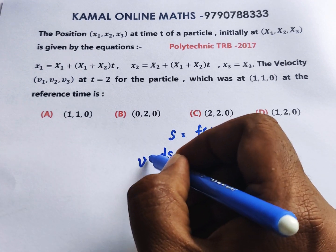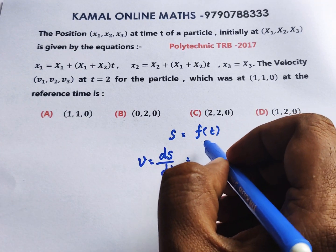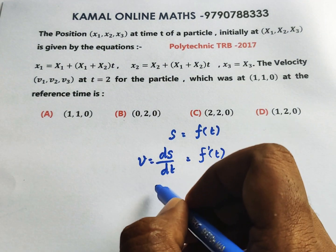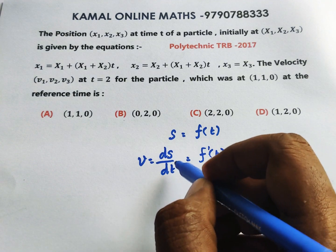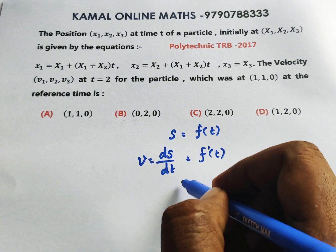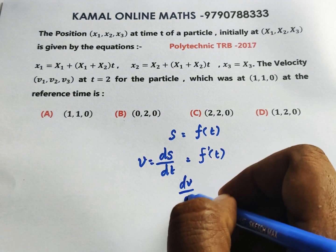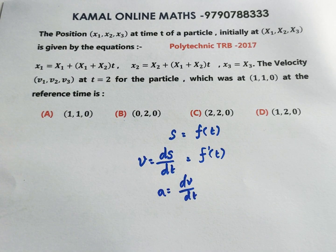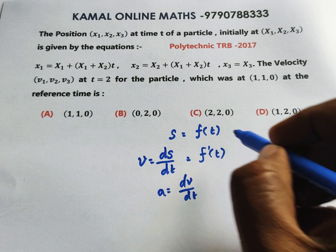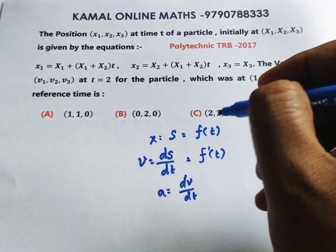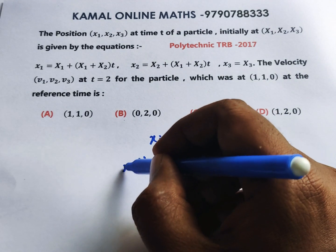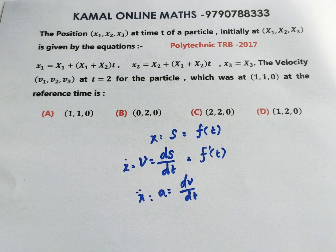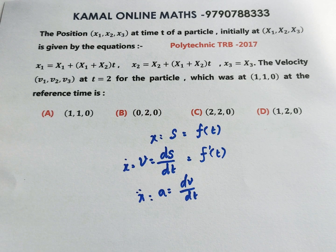We define velocity as ds/dt, the derivative of displacement. If we differentiate the displacement, we get velocity at time t. Further differentiation of velocity, dv/dt, gives us acceleration. We denote velocity as x dot and acceleration as x double dot.